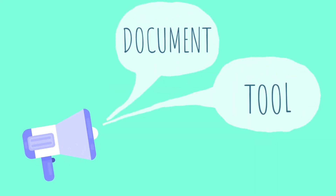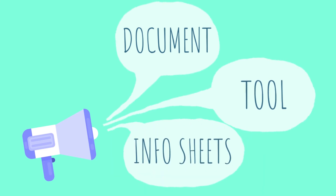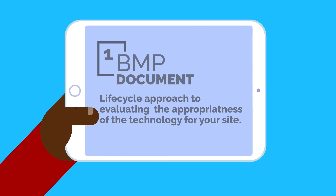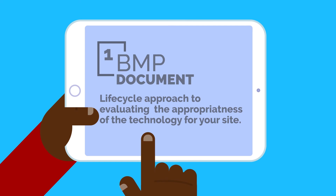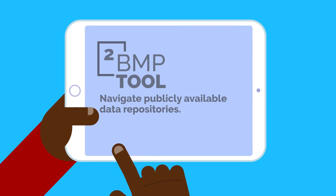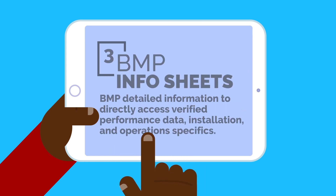The guidance is made up of descriptive text, an interactive tool, and BMP information sheets. The text provides users with general guidance on how to evaluate the appropriateness of specific BMPs for a given stormwater management scenario. The BMP screening tool allows users from all over the country to quickly navigate through enormous amounts of publicly available data to meet their specific needs. BMP information sheets drive the user to more detailed descriptions of BMPs, with regional guidance documents and references.